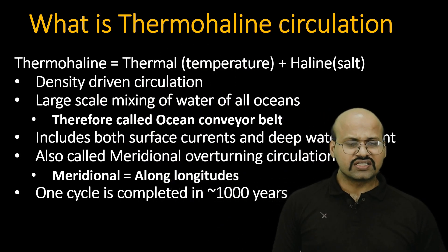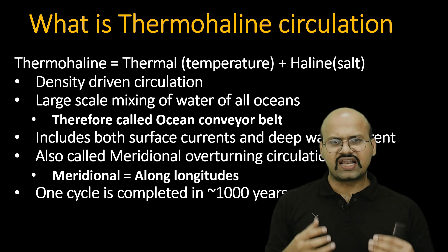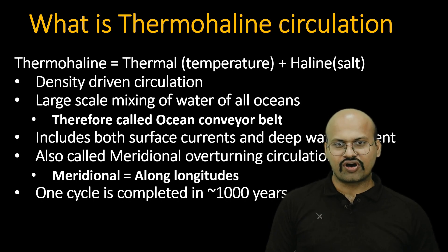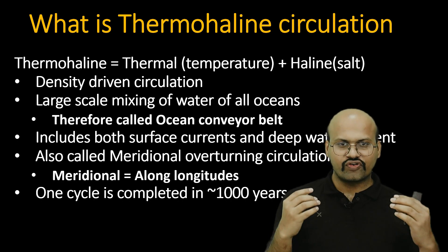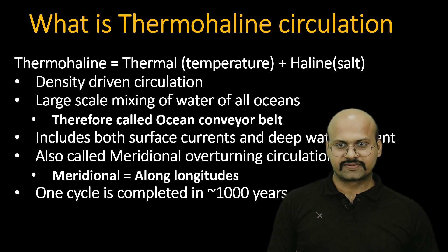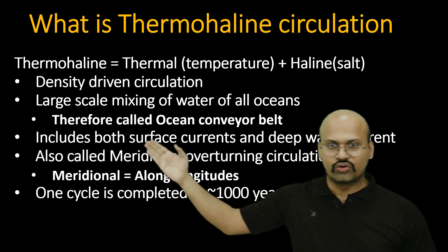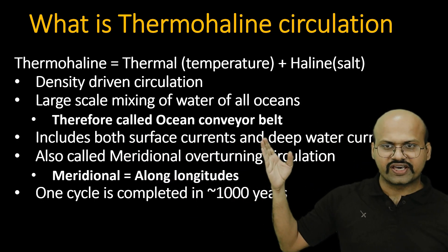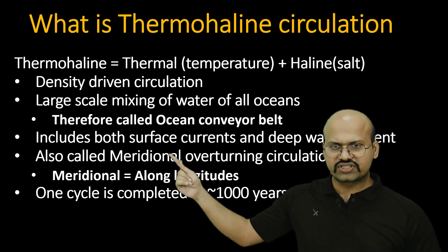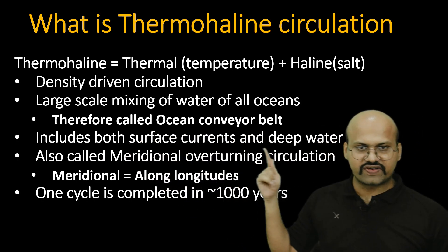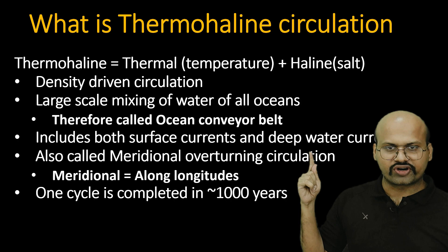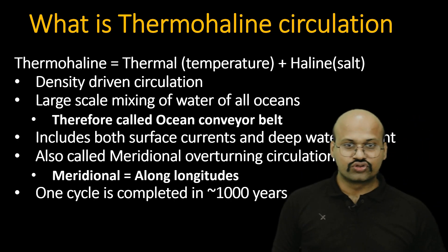Thermohaline circulation is a single large-scale mixing of water of all oceans, and therefore it is called the ocean conveyor belt. It includes both surface currents as well as deep water currents.